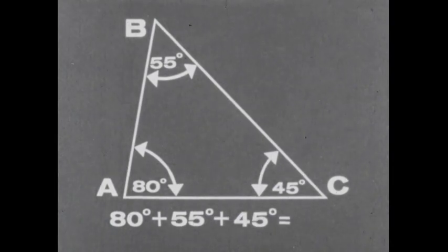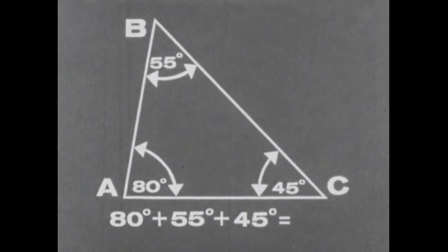The total number of degrees in the three angles of any triangle is 180 degrees. Thus, whenever we know the size of two angles, we can always find the number of degrees in the third one.